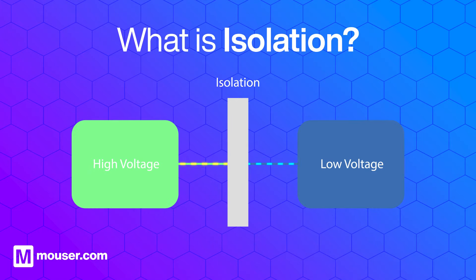Digital, or galvanic, isolation prevents current flowing between two parts of a system, but still allows the required signal and power to pass.